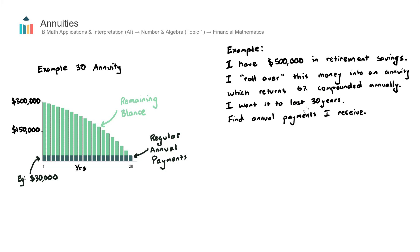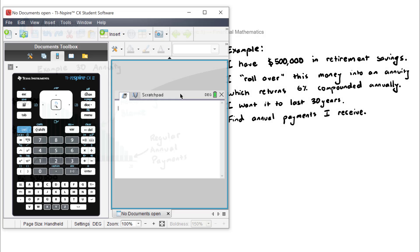I want this to last for 30 years. Maybe I'm 60 years old and think that I'm going to live to 90, so I want these fixed payments over a 30-year period as I enjoy my retirement. Find the annual payments that I receive with these characteristics. Let's solve this using the finance solver — let's bring that up.